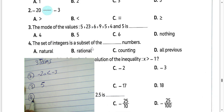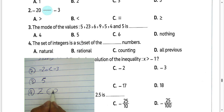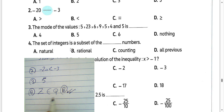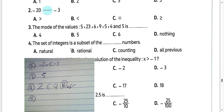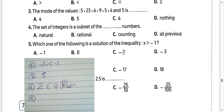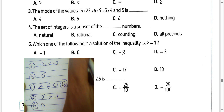Number 4: the set of integers is a subset of rational numbers. Choose letter P. Number 5: which is the following solution of the inequality X greater than negative 1? It will be 0, because 0 is greater than negative 1. Then you must choose letter P.